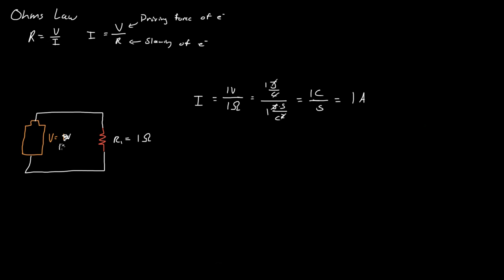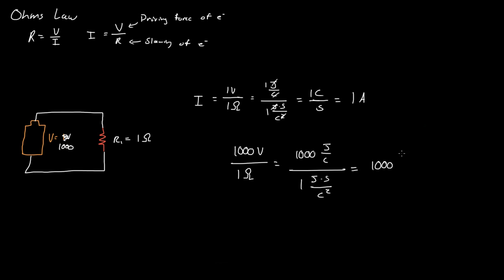Now let's say we increase the voltage to a thousand volts. We have a thousand joules per coulomb divided by one ohm — one joule per second per coulomb squared — and we get a thousand coulombs per second, or a thousand amps. Just to clarify, one coulomb is equal to 6.241 times 10 to the 18th electrons, so a thousand coulombs is that number times a thousand — that's how many electrons are flowing through.